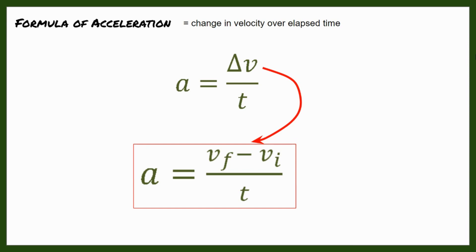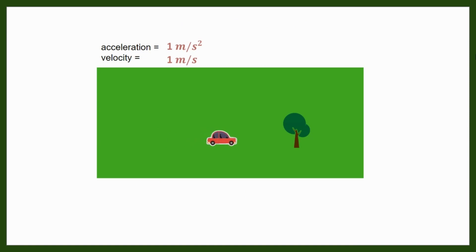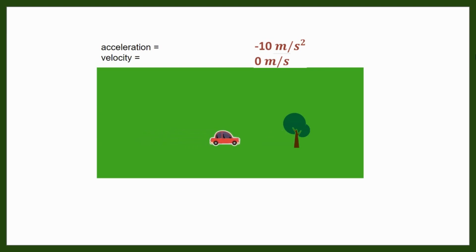So A is equal to V sub F minus V sub I over the time. The initial velocity V sub I is often zero, but not all the time — there are cases where it has a value, so you have to be mindful of the sample problem. You will see that as a car increases velocity it gains acceleration, and when the car comes to a stop, its velocity becomes zero and the acceleration becomes negative.